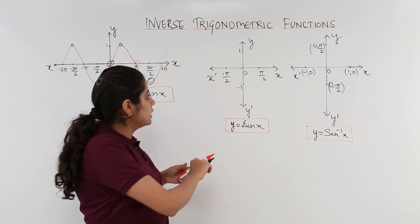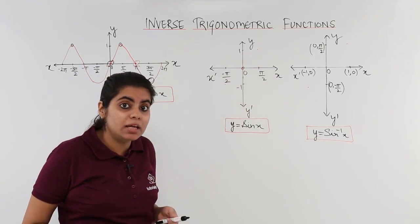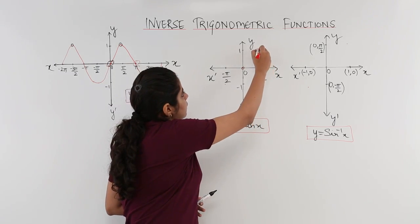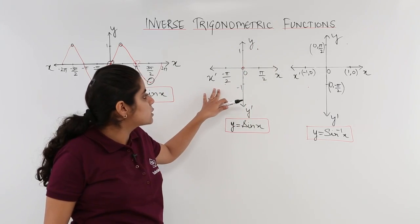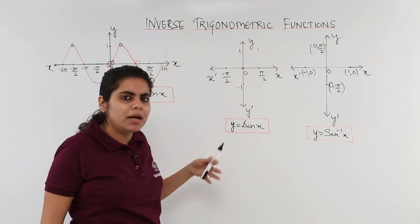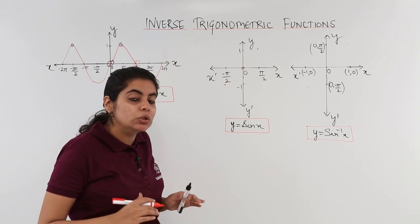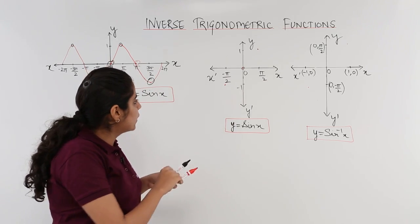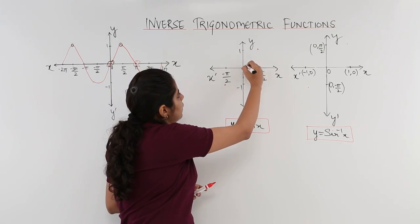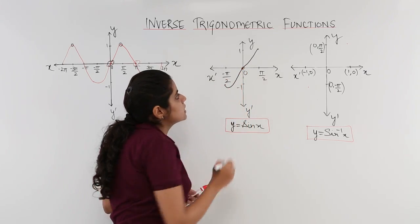Now, we have restricted the domain. Everything else will vanish. What will happen? Only -π/2 to π/2 is considered. The graph is what? Sin 0 is 0. Sin π/2 is 1. And sin of -π/2 is nothing but -1. So, it is somewhat here. We have to just draw the graph by joining the lines.